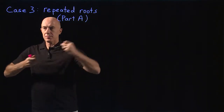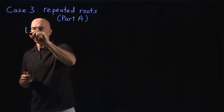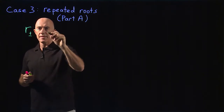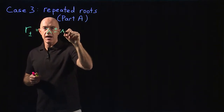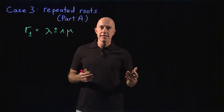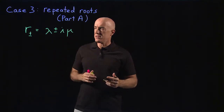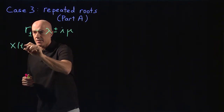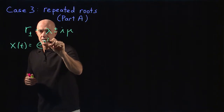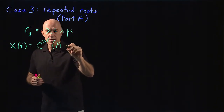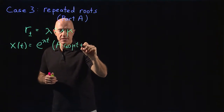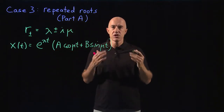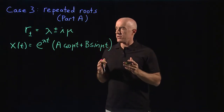We assume we have complex conjugate roots, written as r plus and minus, so lambda plus and minus i times mu. The solution in this case is x of t equals e to the lambda t times a cosine mu t plus b times sine mu t. That's the general solution in the case of complex conjugate roots.